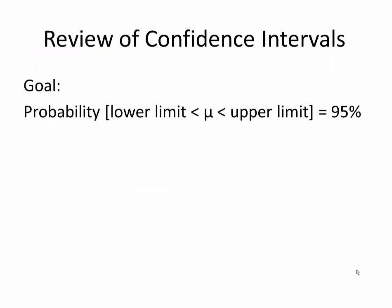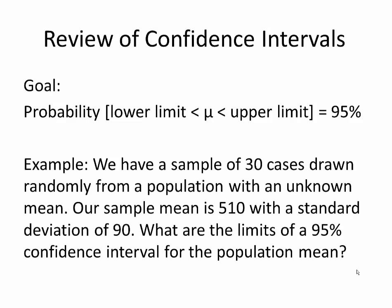Just a quick reminder of confidence intervals. The goal is to identify a lower and an upper limit — bounds for a population mean — based on a sample. For example, we might have 30 cases drawn randomly from a population with an unknown mean. Our sample mean is 510 with a standard deviation of 90. The question is: what are the limits of a 95% confidence interval for the population mean?